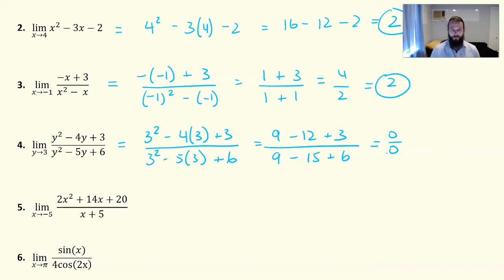So as with the previous example where we had an indeterminate in the previous video, we're going to try to factor the top and factor the bottom and see if we can remove that hole. It is a hole that causes the 0 over 0 at 3. The numerator is going to factor to y minus 3, y minus 1. The denominator is going to factor to y minus 3, y minus 2.